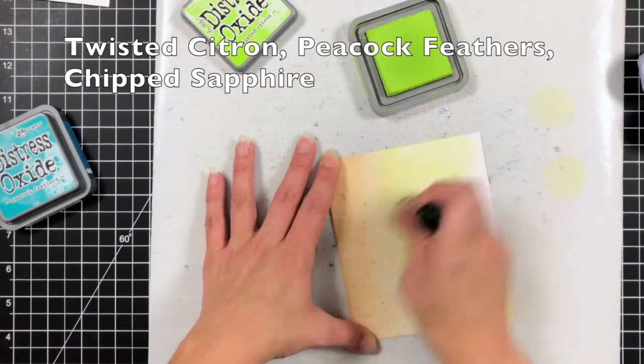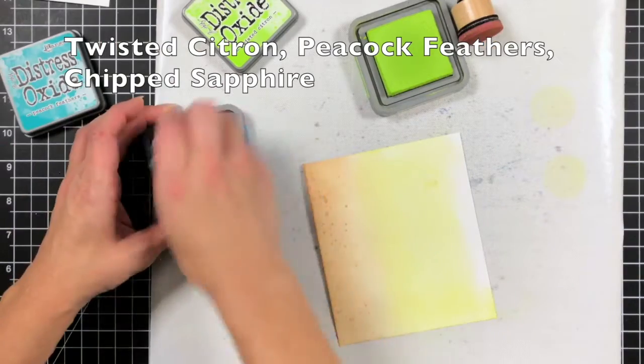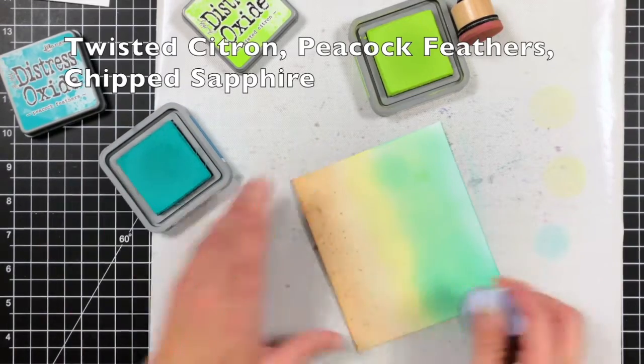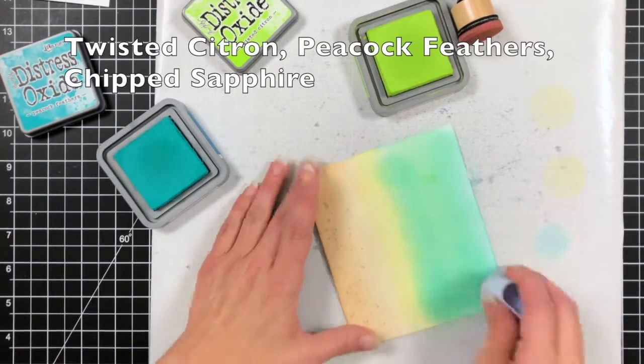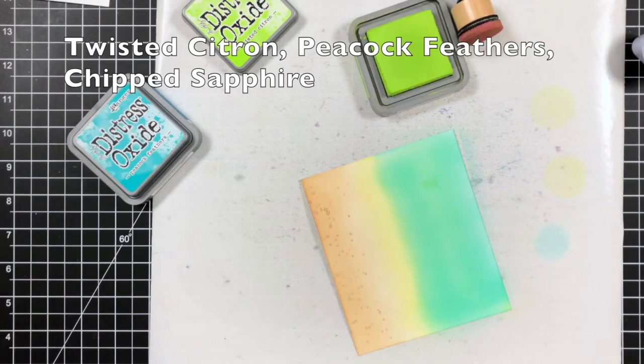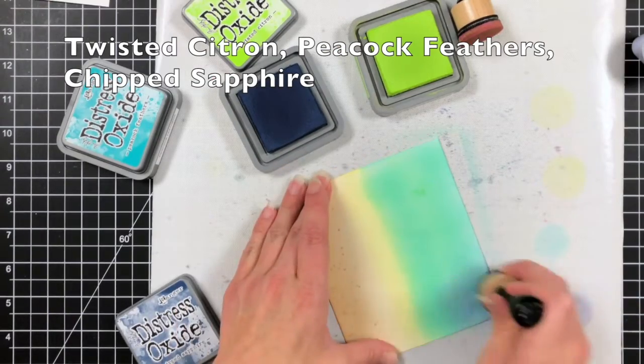So now for the water portion of this I did speed this up quite a bit and the reason being is I way over blended on this. I kind of forgot at this point that I was going to be die cutting this. I'm not going to use the whole sheet so I just really way over blended. But I did want to leave all this footage in here for you in case you wanted to see what I had done.